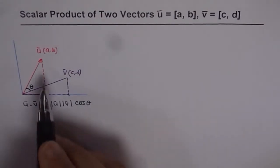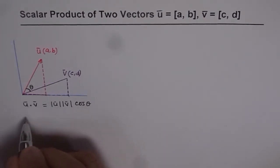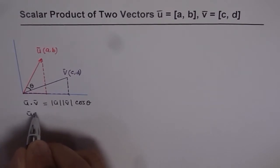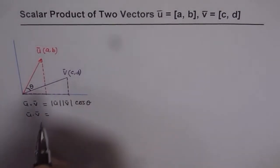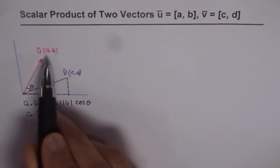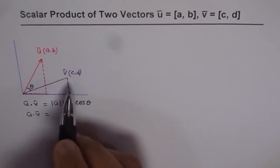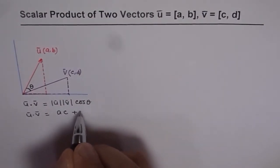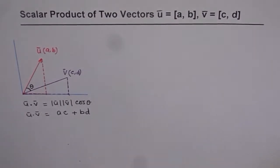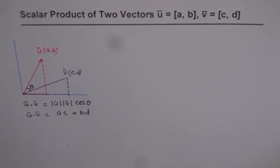When we are given vectors in the Cartesian plane, we can algebraically find the value. The easy way is by using the formula where the X components are A and C and the Y components are B and D. In this case, U dot V equals AC plus BD — that is, the product of X components plus the product of Y components.